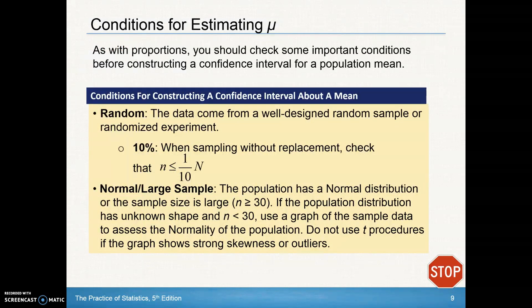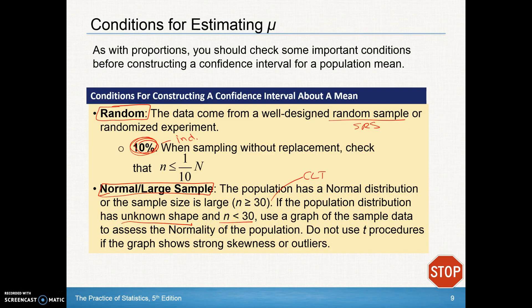Conditions for estimating mu. As with proportions, you should check some important conditions. Those conditions are randomness—make sure that we're taking from a well designed random sample, an SRS. Make sure that we are checking the 10% condition for independence and that we can use our standard deviation that we were calculating before. And then also make sure that we are assessing normality. If the population has a normal distribution or if the sample size is large, that's the central limit theorem that allows us to use the normal curve and to use normal calculations. But if the population distribution has an unknown shape, we don't know if the population is normal, and our sample size is less than 30, what you should do is you should graph the sample data. And then if that graph looks normal, we can assume normality because our sample data should reflect the population data.